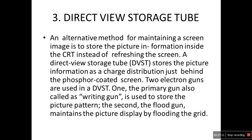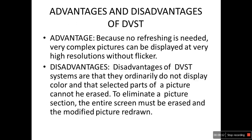The third type is direct view storage tube, DVST — an older technology but still important to learn. Instead of refreshing the screen, DVST stores the picture information as a charge distribution just behind the phosphor-coated screen. Two electron guns are used: the primary gun, also called the writing gun, stores the picture pattern, and the flood gun maintains the picture by flooding the grid.